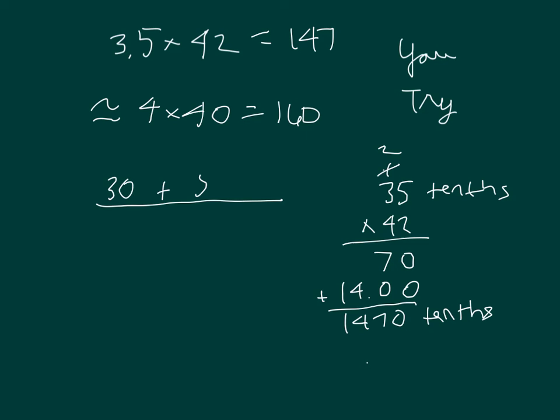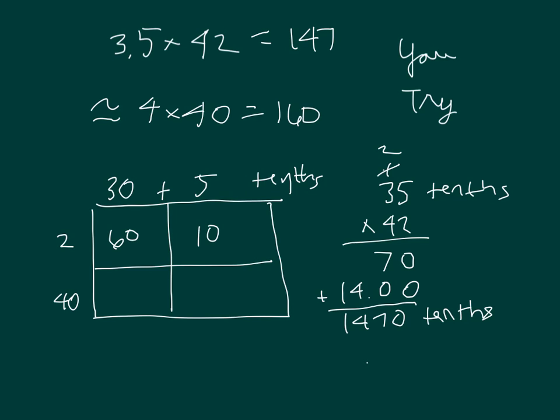What did your area model look like? 30 plus 5 tenths. And then we have 2 along with 40. 2 times 30 is 60. 2 times 5 is 10. If we added those together, we would get 70.